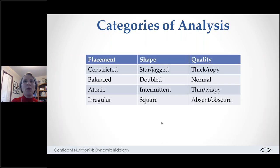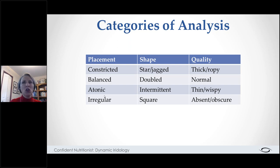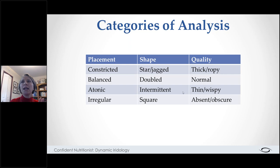When analyzing a collarette, we look for three categories. First, placement — is it constricted, balanced, atonic, or irregular? Second, shape — is it star or jagged, doubled, intermittent, or squared? Third, quality — is it thick and ropey, normal, thin and wispy, or absent and obscure? We may not see all of these clearly in every eye, but those are the categories we're looking for.